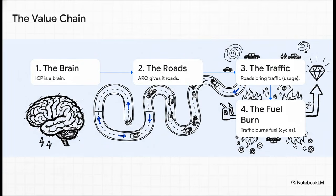So here it is, the entire value chain laid out in five perfect, simple steps. Step one, ICP is the brain. Step two, ARO gives it the roads. Step three, those roads bring traffic. That's the real usage. Step four, the traffic burns fuel, the cycles. And that brings us to the final, crucial step. Five, the burned fuel is what ultimately makes the brain valuable. It's a direct, beautiful line from infrastructure to utility.